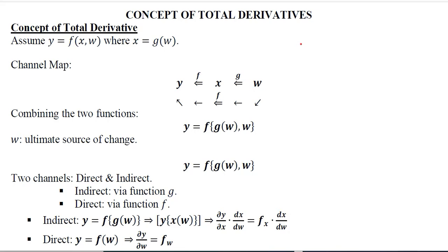We have an idea of total differentials, but we also need to know about the concept of total derivatives. We are assuming that we have a function where y depends upon x and w, but if x also depends on w, the situation will be slightly different. Because there are two functions that are intertwined and overlapping with each other, we have to find the total derivative because there is not just one rate of change.